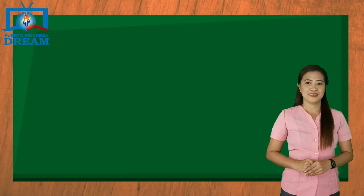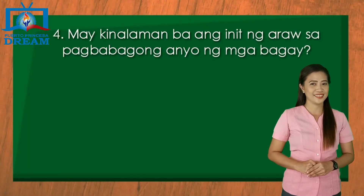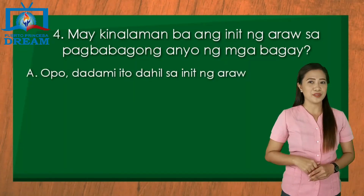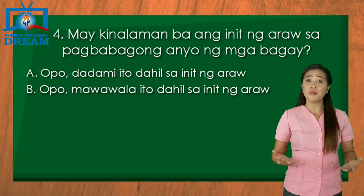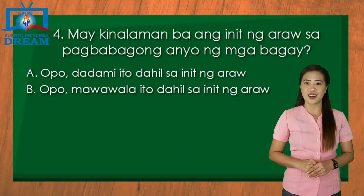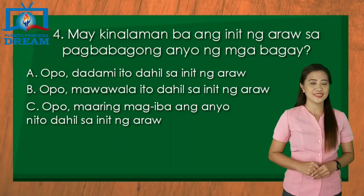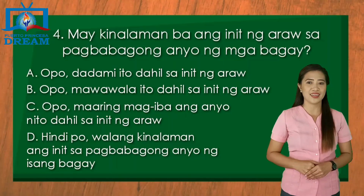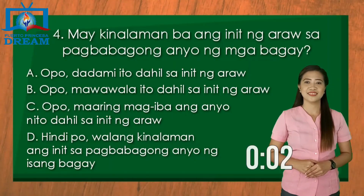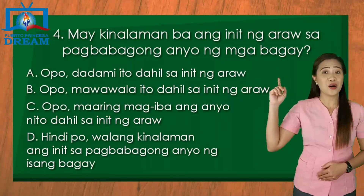Ikaapat: may kinalaman ba ang init ng araw sa pagbabagong anyo ng mga bagay? A. Opo, dadami ito dahil sa init ng araw. B. Opo, mawawala ito dahil sa init ng araw. C. Opo, maaaring mag-iba ang anyo nito dahil sa init ng araw. D. Hindi po, walang kinalaman ang init sa pagbabagong anyo ng isang bagay. Ang tamang sagot ay C. Mahusay!